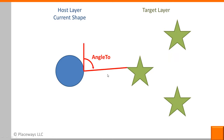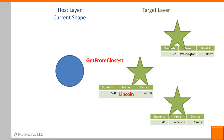Angle 2 is a similar kind of function that gives you more of the idea of spatial calculations. It measures the angle of that line compared to north, so you can tell whether a feature is north, east, south, etc. Another very popular function is get from closest. What this does is look up the name, number, or other attribute value of the nearest feature in the target layer. For example, if these were schools and that one's named Lincoln, get from closest would tell the host layer's current shape that its nearest school is named Lincoln.